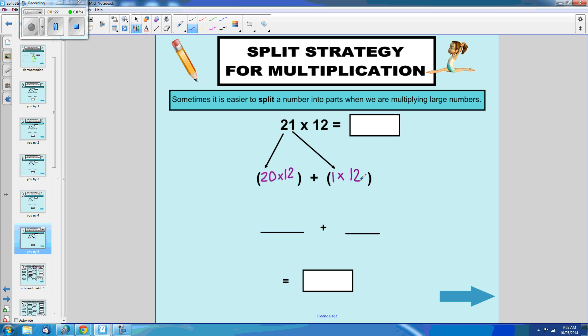Solve each bracket. 20 times 12 equals 240. 1 times 12 equals 12. 240 plus 12 equals 252. Our answer to 21 times 12 is 252.